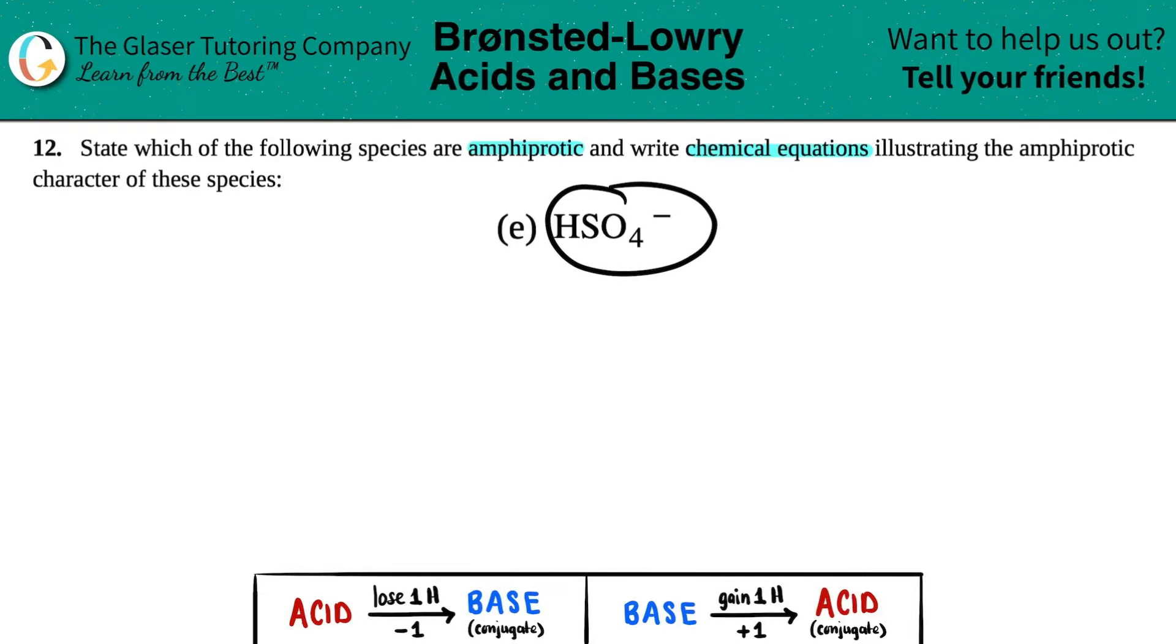This is sometimes called amphoteric, so your teacher or professor might use that word instead, but it's basically the same thing. If you're an amphiprotic or amphoteric species, you can act as an acid and a base, so you've got both properties just depending on the situation that you're in.